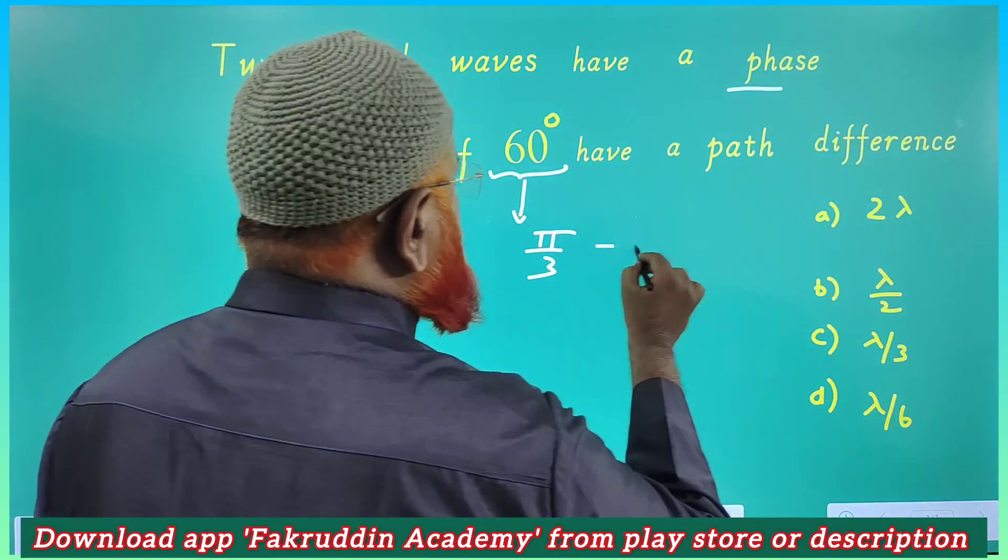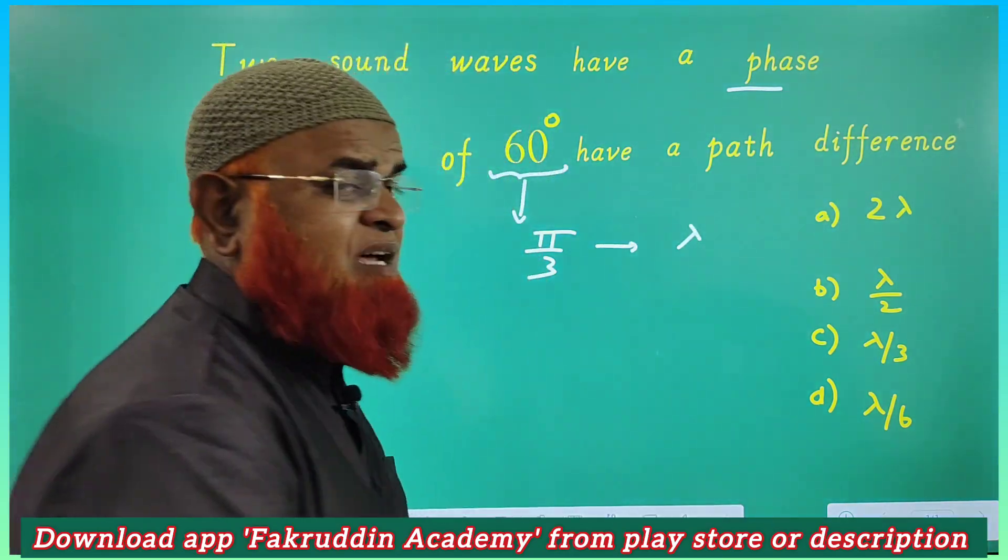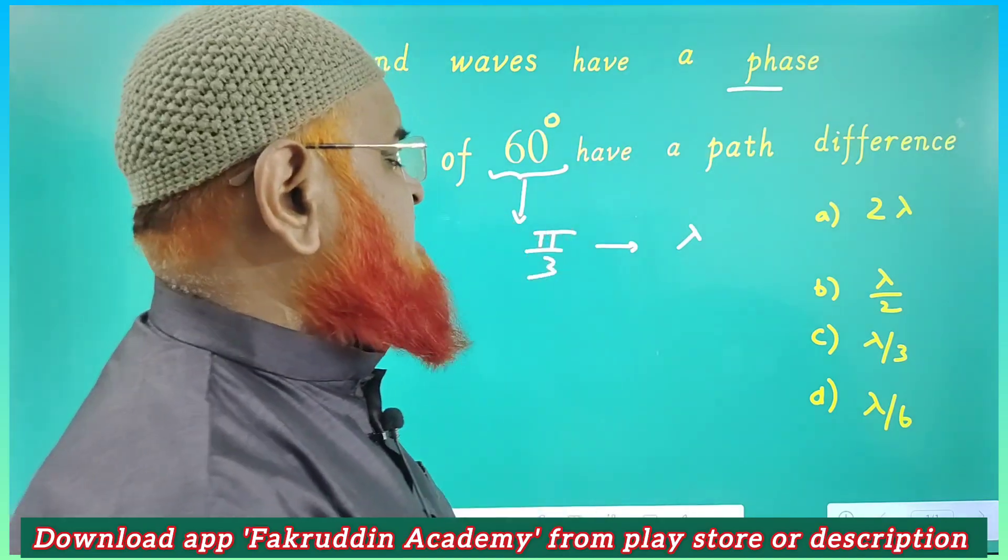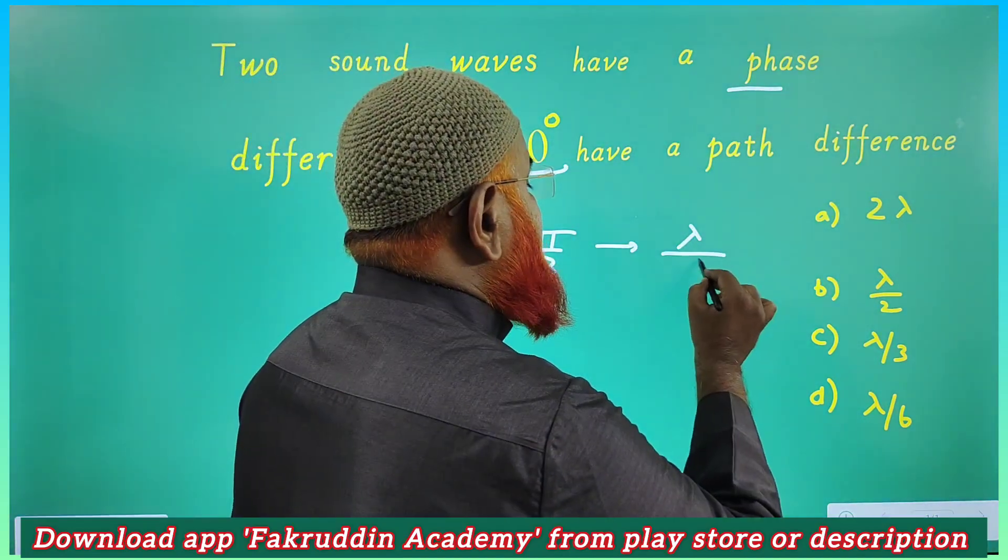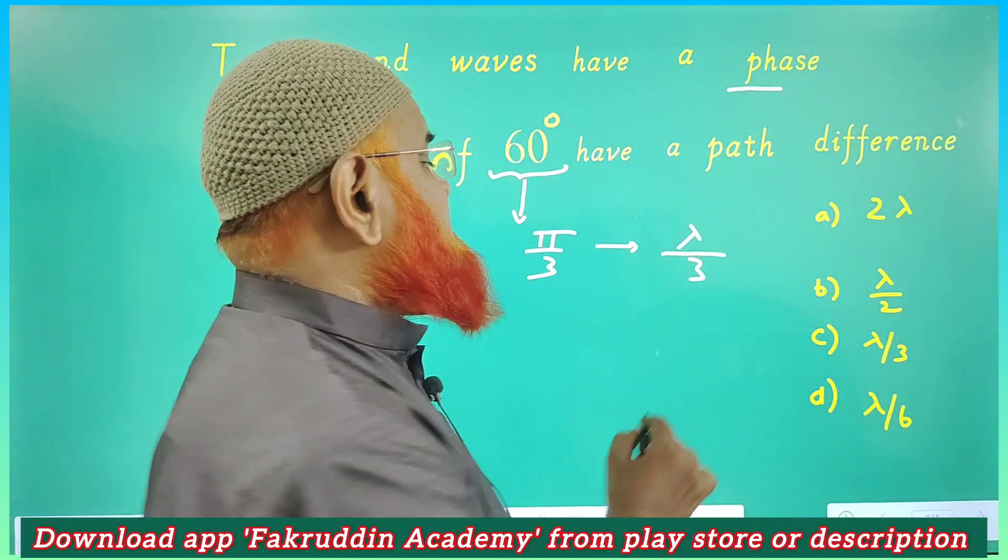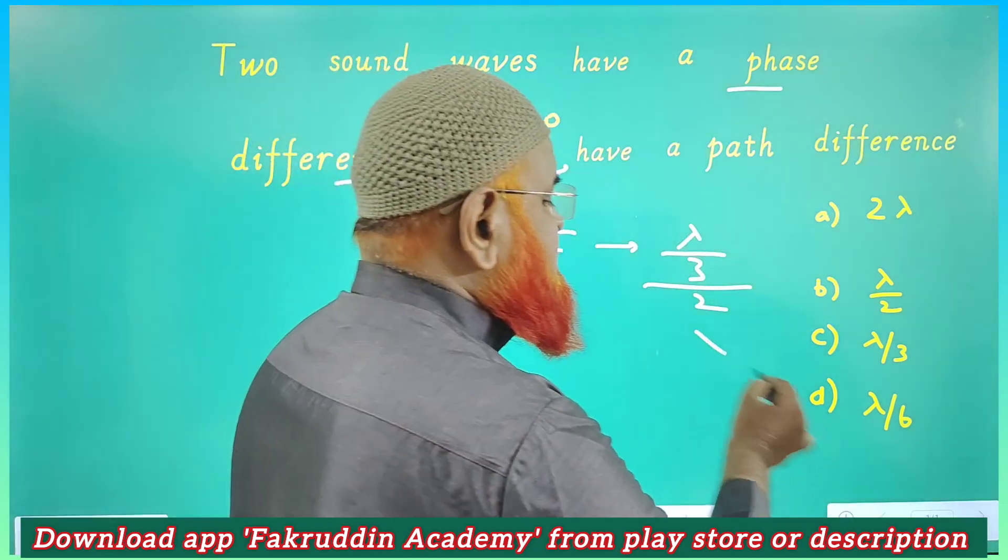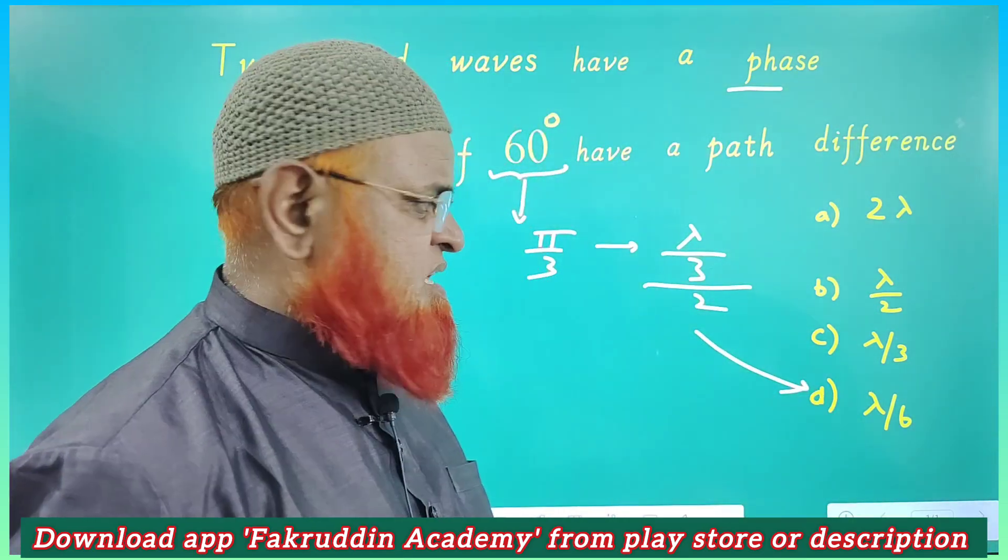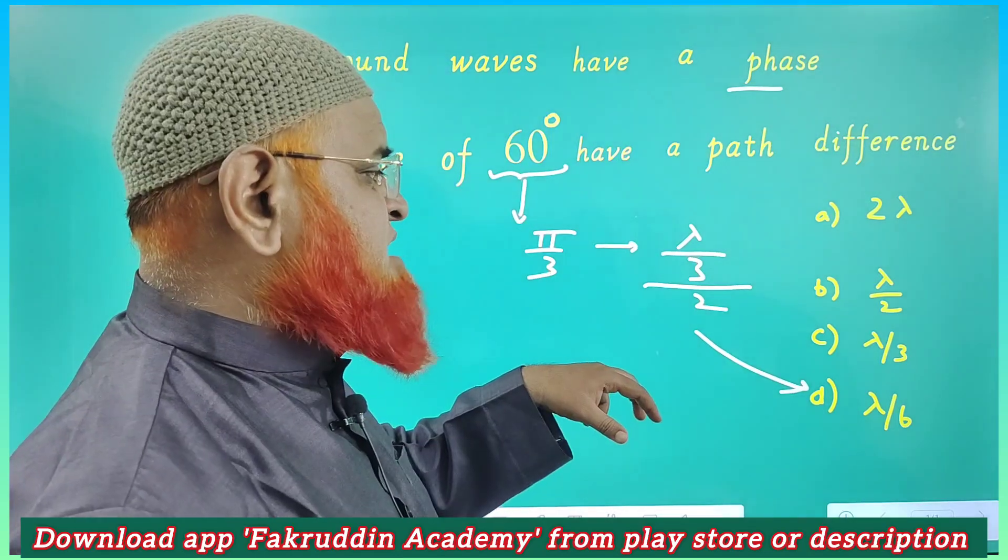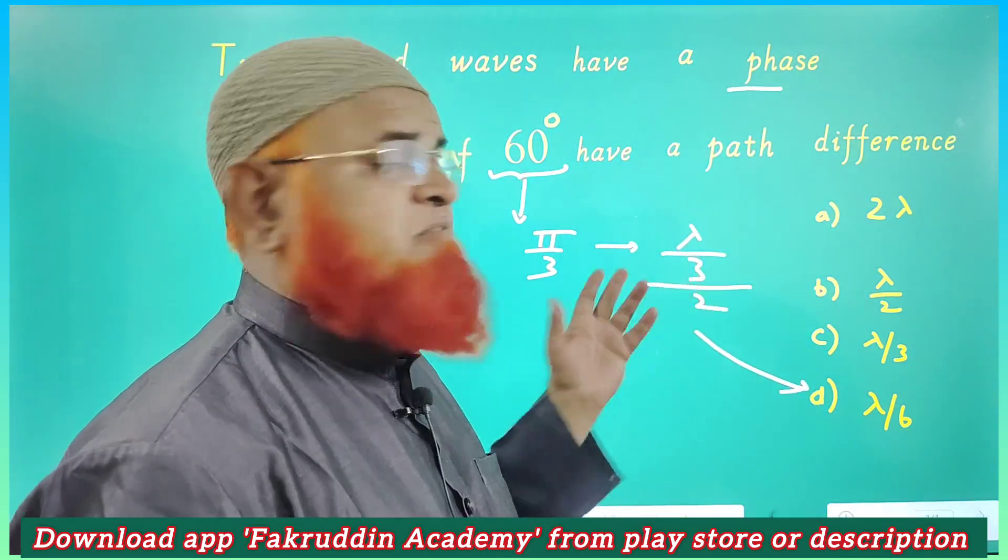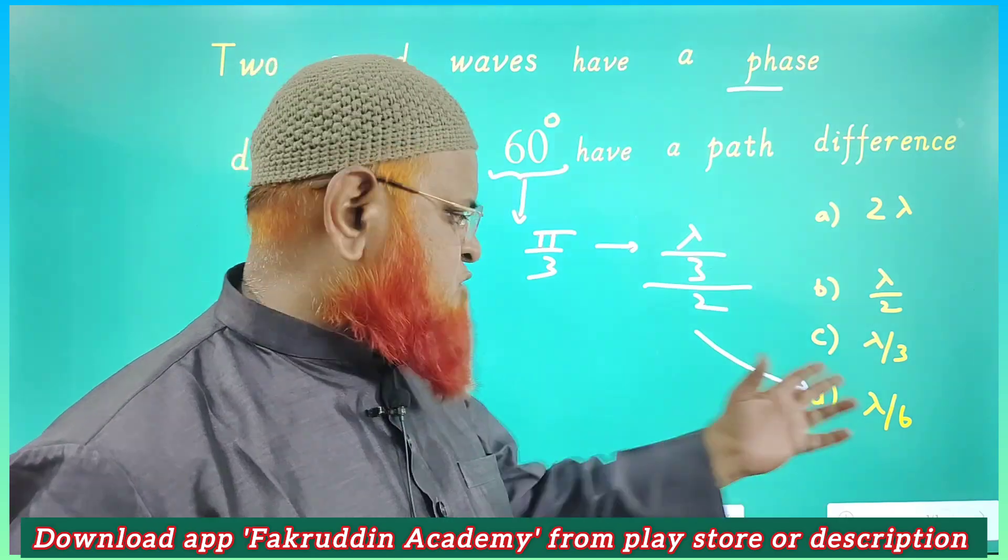Then how much should be lambda - that is path difference in terms of lambda? So here, if phase difference is π/3, you can write λ/3 and divide it by 2. That is going to be your answer - that is, Δ is going to be λ/6. If phase difference is 5π/3, then path difference will become half of λ/3. That is going to be answered directly, and let me discuss what is the reason behind that also.